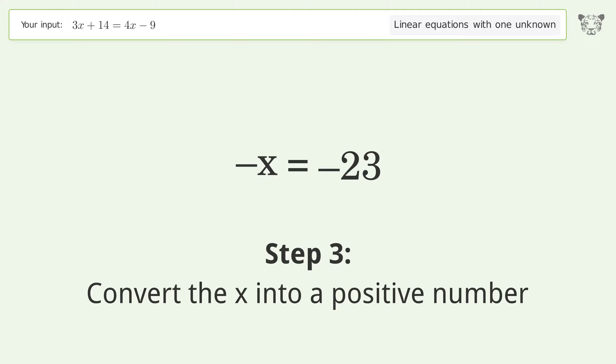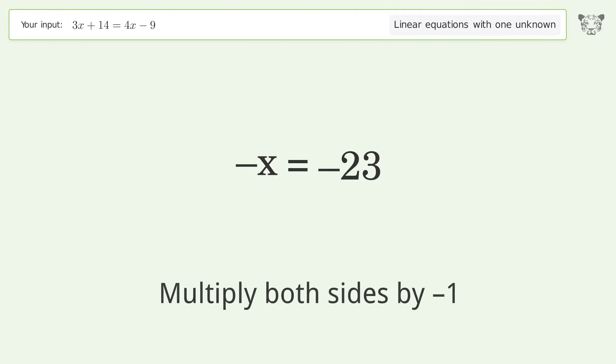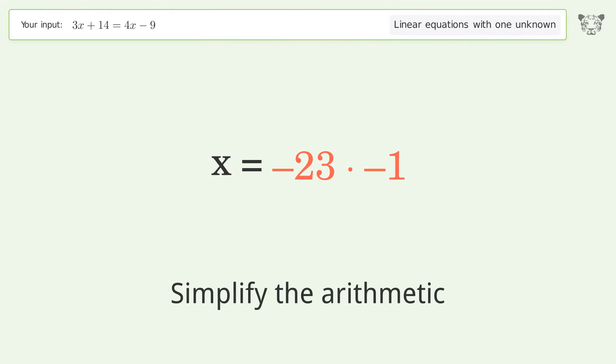Convert the x into a positive number. Multiply both sides by negative 1. Remove the 1s and simplify the arithmetic.